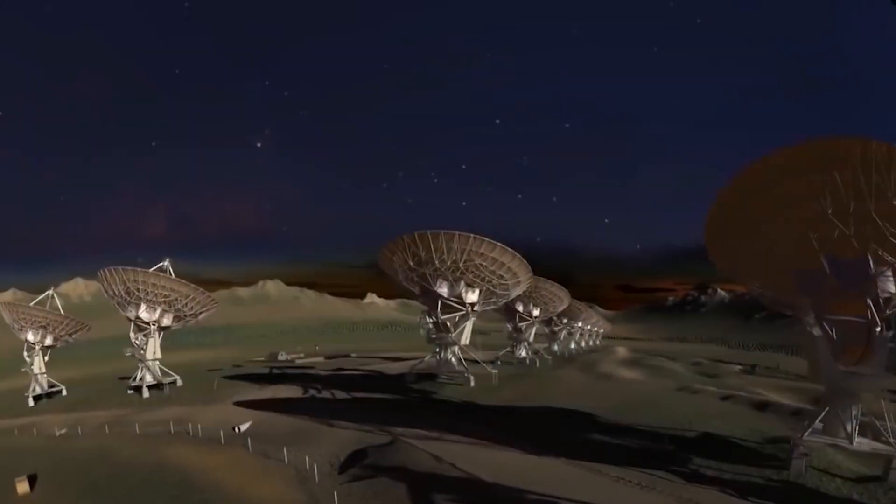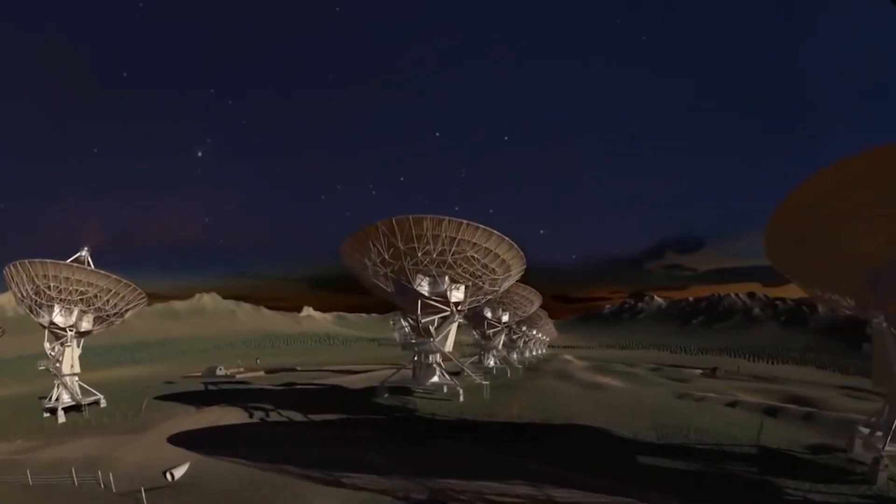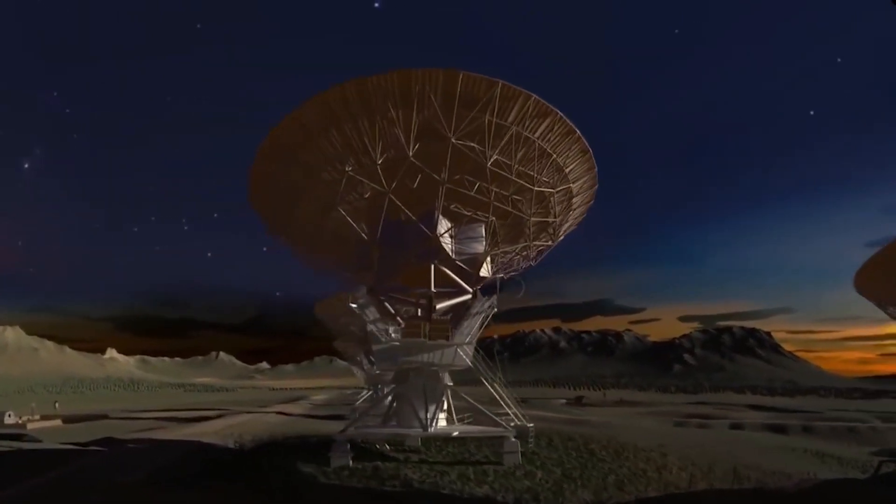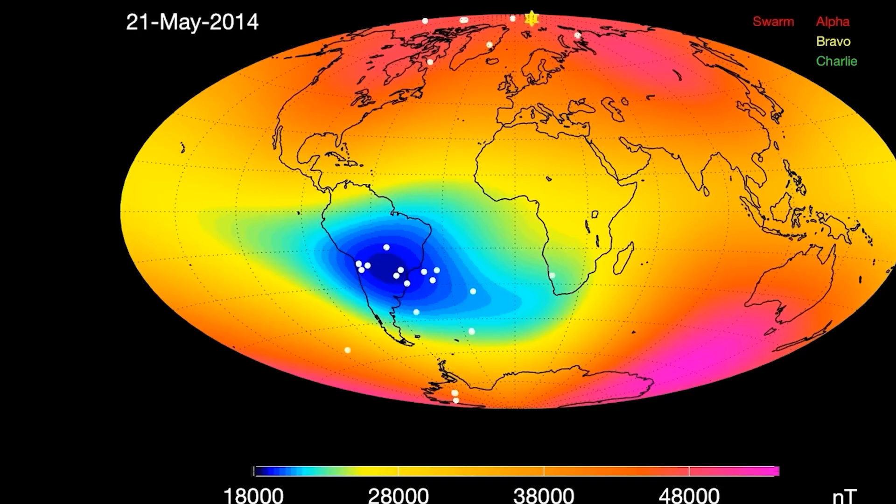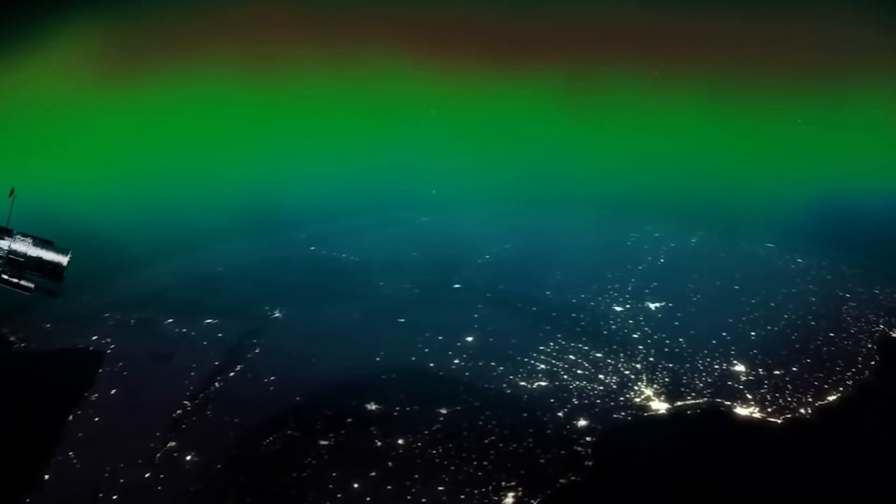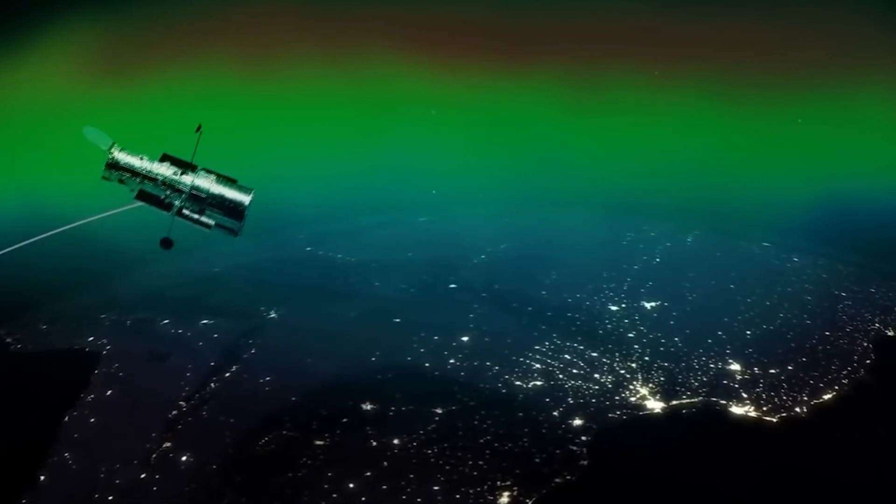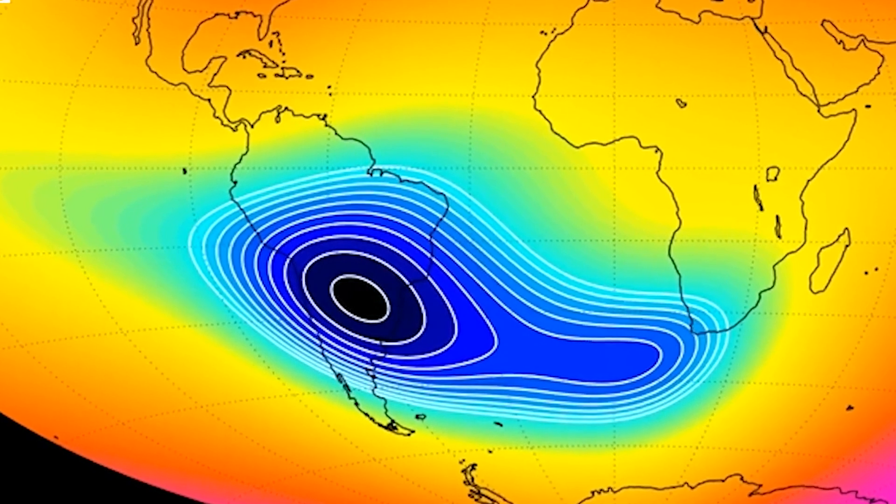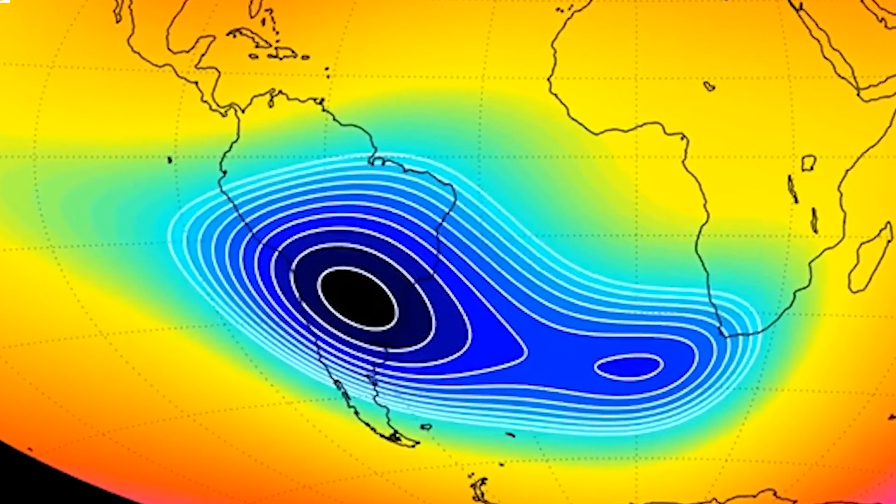In 2016, scientists discovered that the South Atlantic Anomaly isn't just hanging out in one place. It's drifting in a northwesterly direction. Talk about taking a little field trip. But that's not all. Recent satellite data from the European Space Agency revealed that the South Atlantic Anomaly is splitting into two separate cells. It's like witnessing the birth of a magnetic duo.